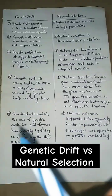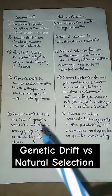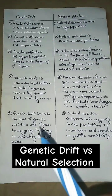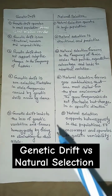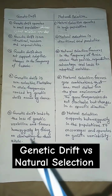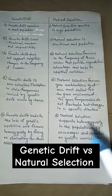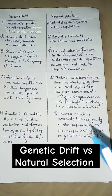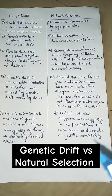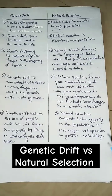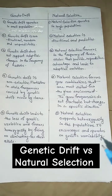Genetic drift leads to the loss of genetic variation and favors homozygosity by fixing or eliminating alleles. Natural selection, on the other hand, supports heterogeneity in the population, encouraging and operating on genetic variability.